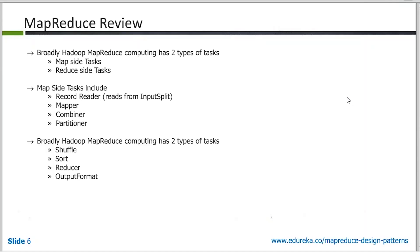Broadly, if you look at the MapReduce framework, the tasks can be divided into two different categories. We have the MapSide tasks and the ReduceSide tasks. What is included in the MapSide tasks is the record readers along with the input split. Then you have the mapper, combiner, and partitioner. On the ReduceSide, you will see the Shuffle, Sort, Reducer, and the output format.